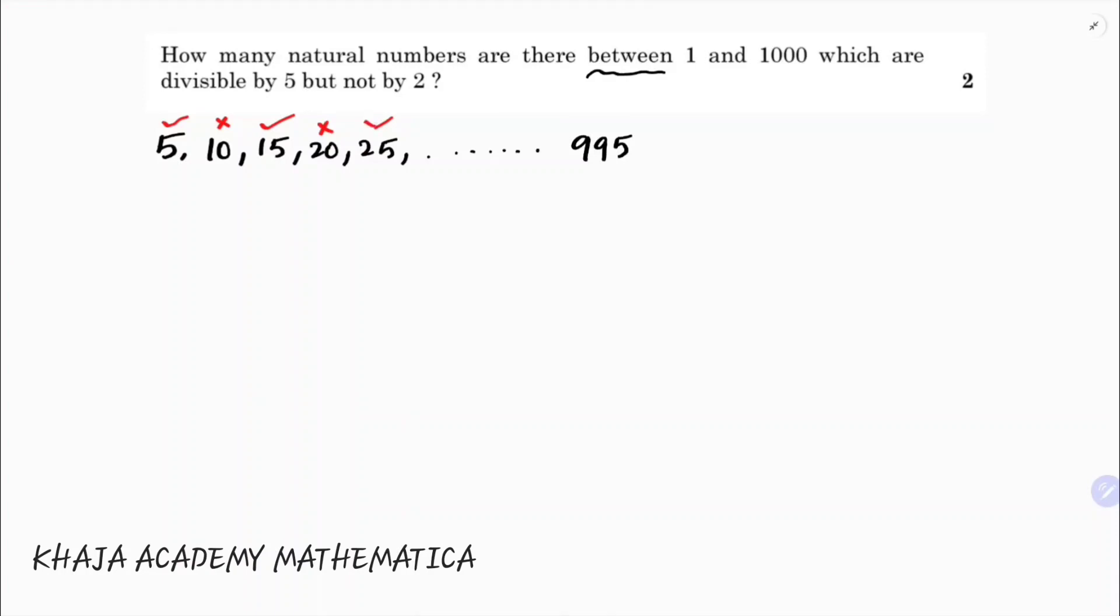So now the series will be here: 5, 15, 25, and so on. And the last number is 995 which is divisible by 5 but not by 2.